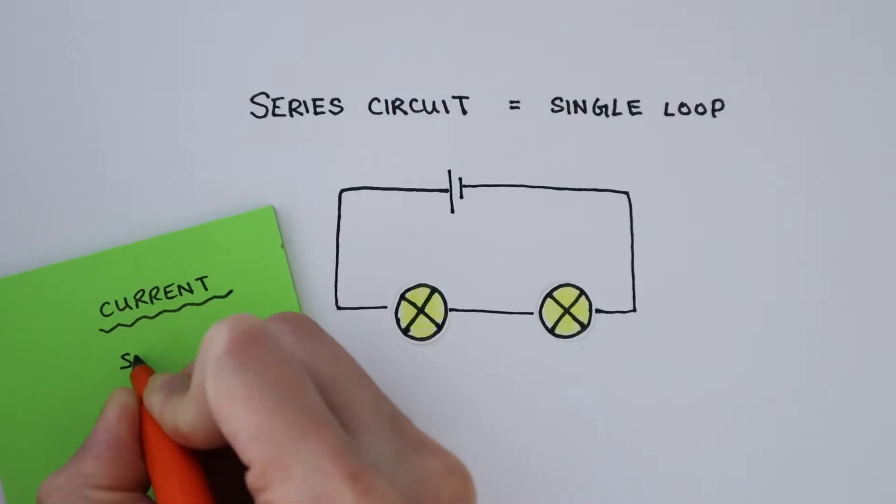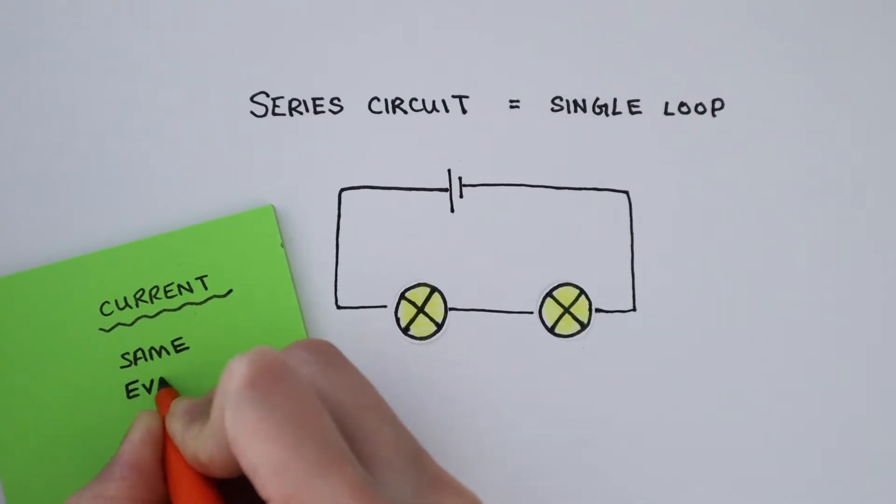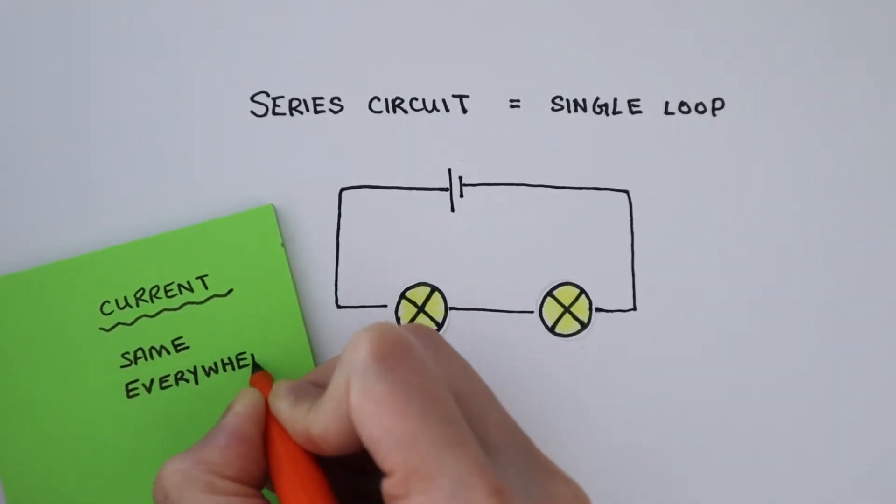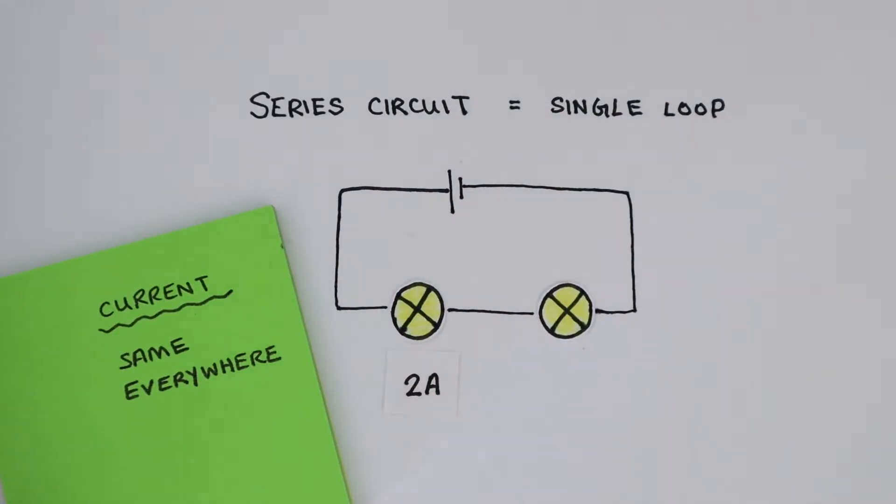In a series circuit, the current is the same everywhere in the circuit. If a current of 2 amps is going through this bulb, then there must also be 2 amps of current here.